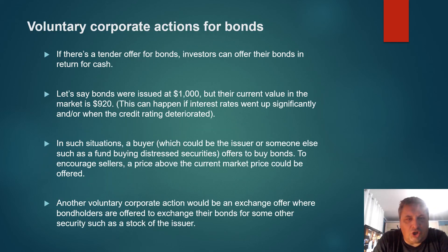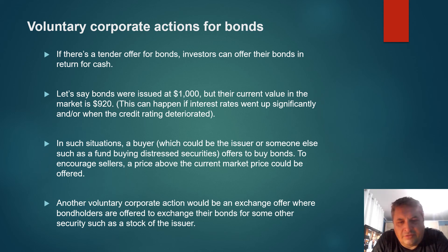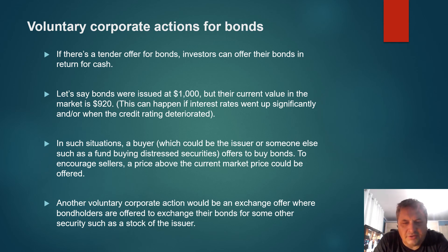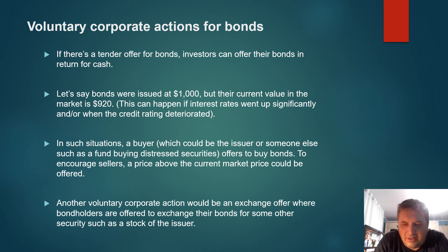Now let's talk about voluntary corporate actions for bonds. If there's a tender offer for bonds, investors can offer their bonds in return for cash. For example, bonds issued at $1,000 may have a current market value of $920 — this can happen if interest rates went up significantly or the credit rating deteriorated. In such situations, a buyer — which could be the issuer or someone else, such as a fund buying distressed securities — offers to buy bonds. To encourage sellers, a price above the current market price could be offered; if a bond trades at $920, you might sell it at $940.